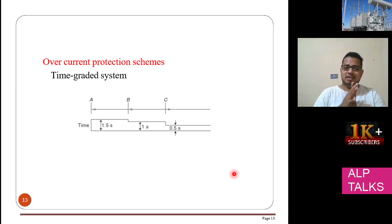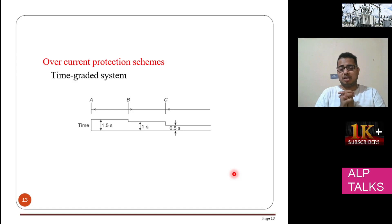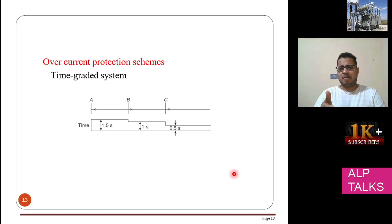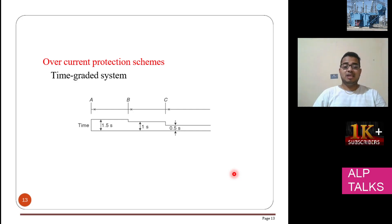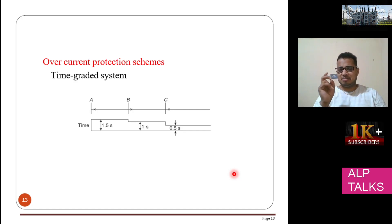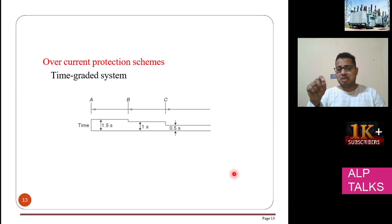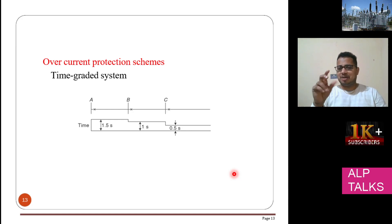There are certain protection schemes. For example, you have a long line with relays at points A, B, and C — A at the start, C at the end, and B in the middle. If a fault happens at the end of the line, C operates at 0.5 seconds, then B at 1 second, then A at 1.5 seconds. This is a time-graded system, which provides a type of backup protection. If C does not operate, after 1 second B will operate. If both B and C fail, after 1.5 seconds A will operate.